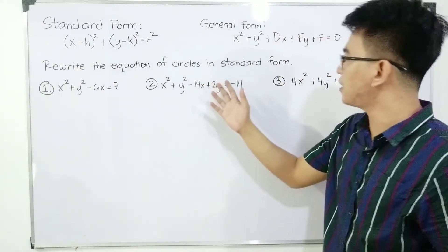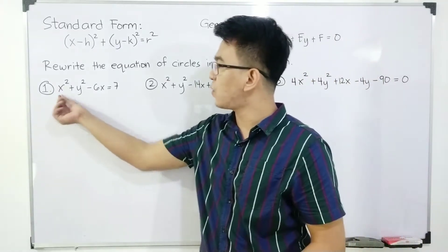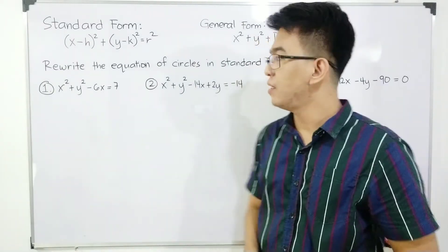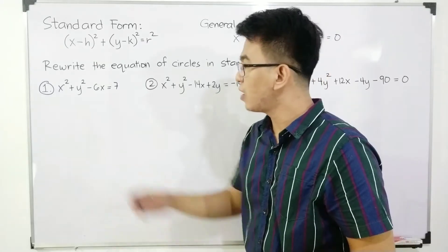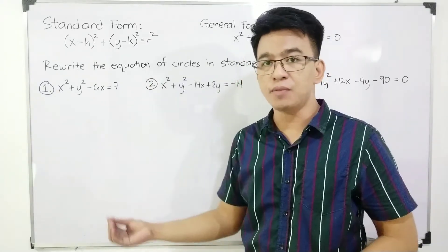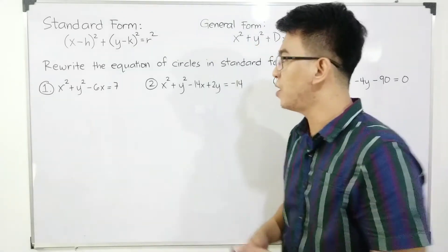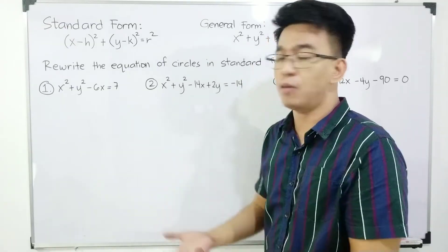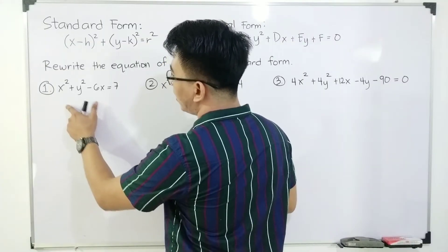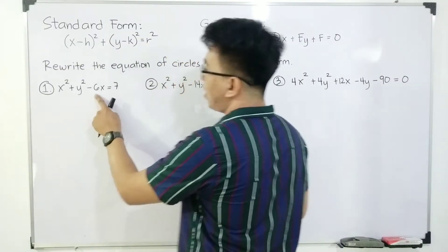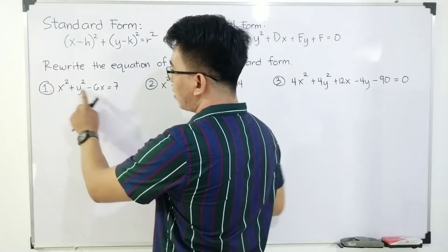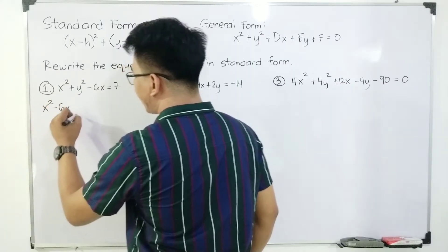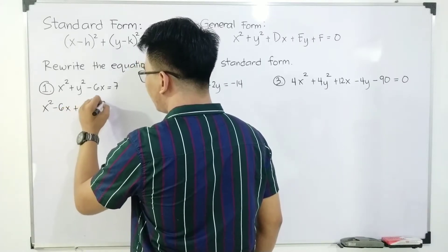We write the equation of the circle in standard form. In number one, we are given x squared plus y squared minus 6x is equal to seven. One of the things we need to do here is to regroup the terms of the given equation — group together the terms with variable x and terms with variable y. So we rewrite it as x squared minus 6x plus y squared is equal to seven.